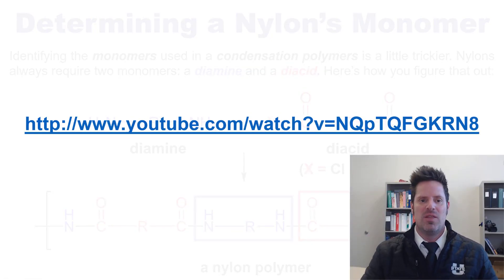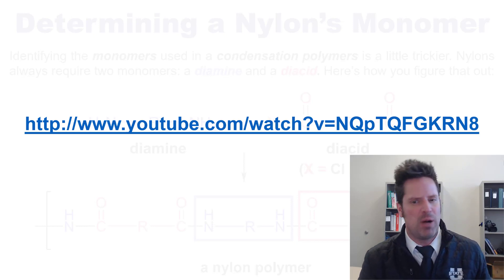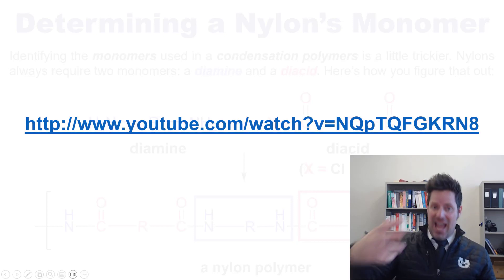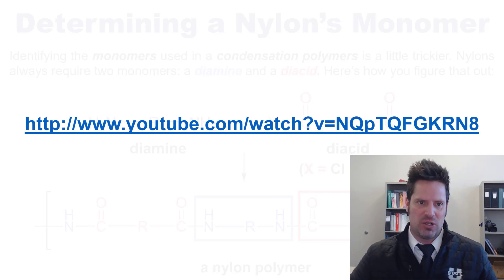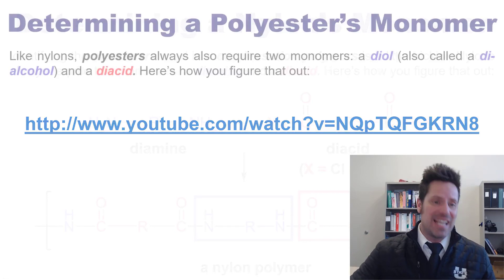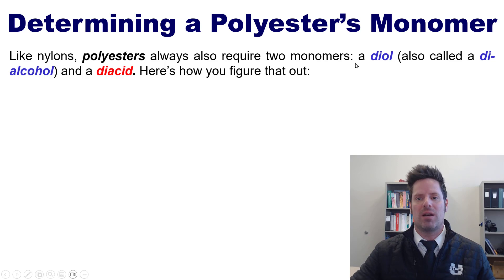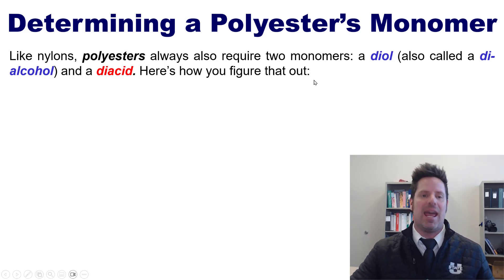There is a link in the description below to a separate video showing the formation of a beautiful condensation polymer. Now let's apply analogous knowledge to polyesters. Like nylons, polyesters also require two monomers: a diol — also called a di-alcohol — and a diacid.